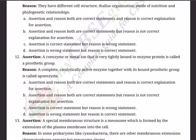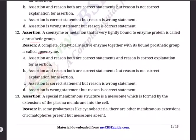Q12 Reason: A complete, catalytically active enzyme together with its bound prosthetic group is called an apoenzyme. Options: (A) A and R both correct, R is correct explanation for A; (B) A and R both correct but R is not correct explanation for A; (C) A is correct but R is wrong; (D) A is wrong but R is correct.